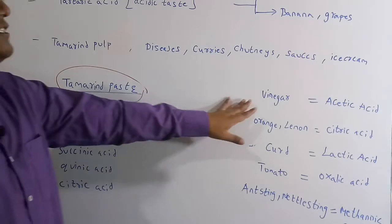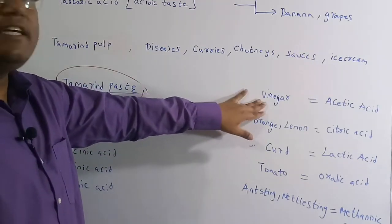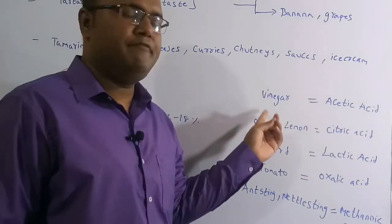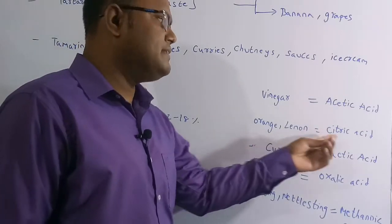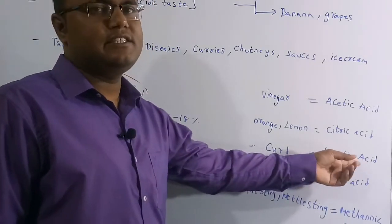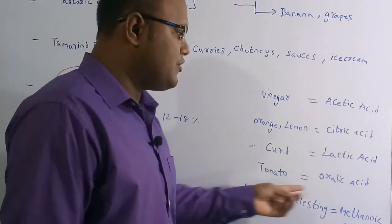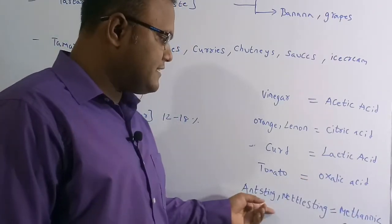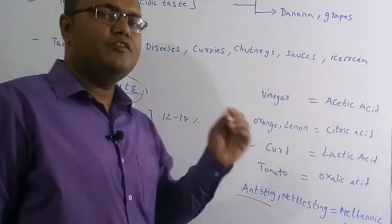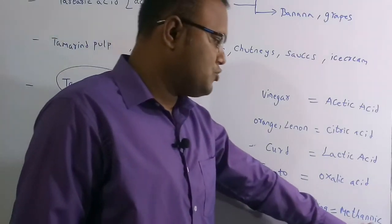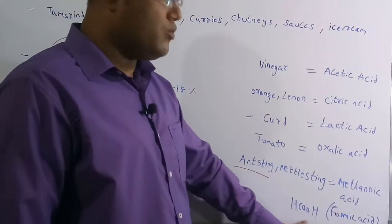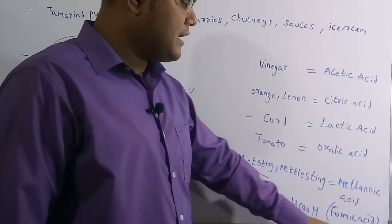Let's discuss some related concepts. In vinegar, the major acid present is acetic acid. For orange and lemon, citric acid is the most major component. For milk curd, we get lactic acid. In tomato, oxalic acid is present. When an ant bites a human being, it releases an acid called methanoic acid, also known as formic acid.